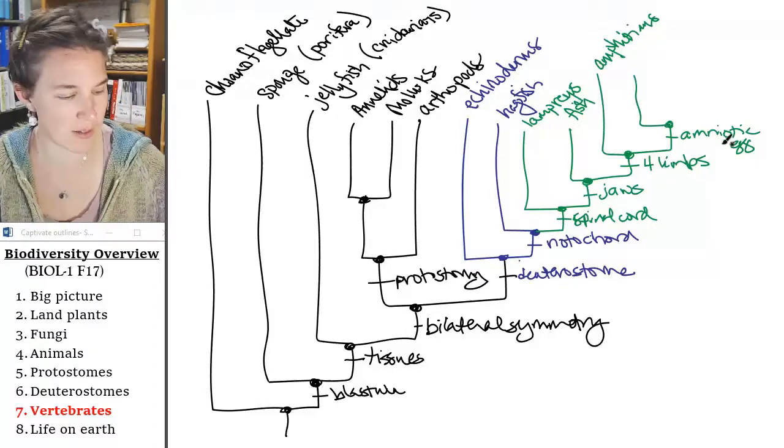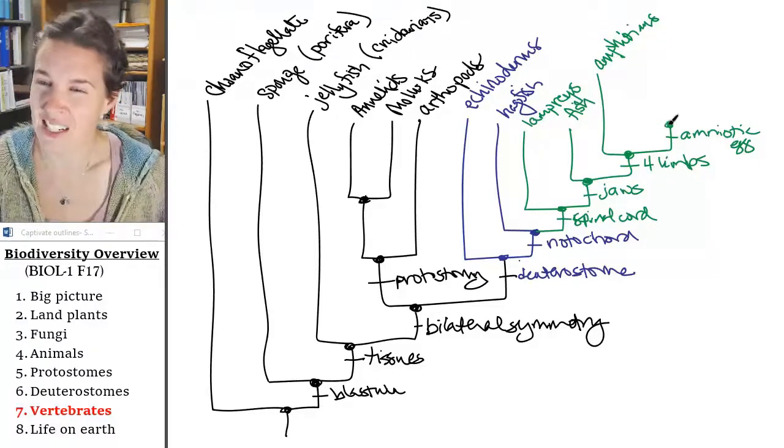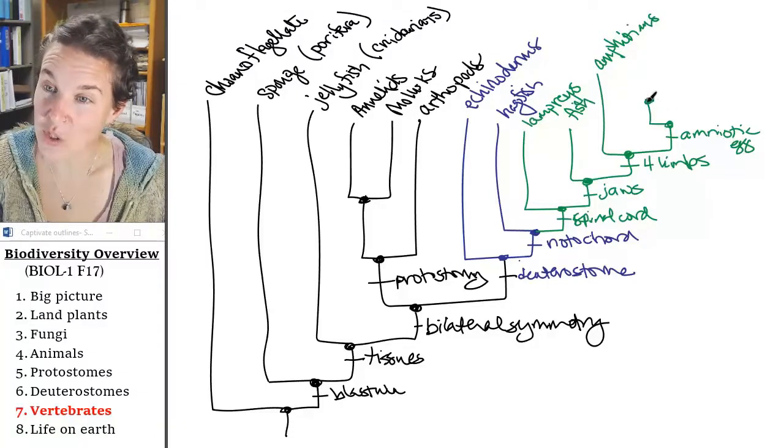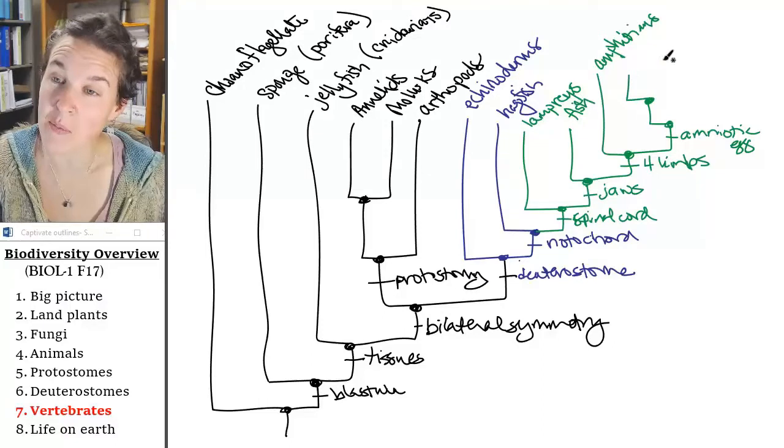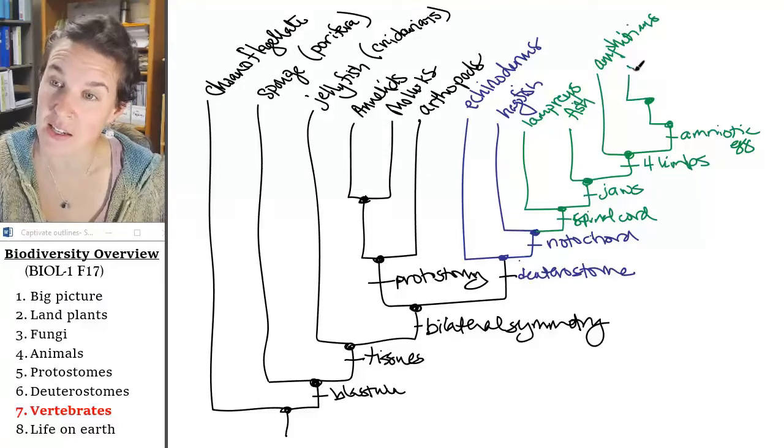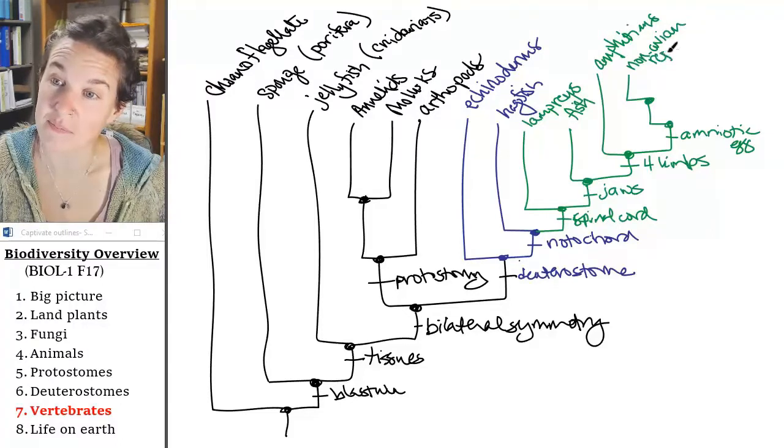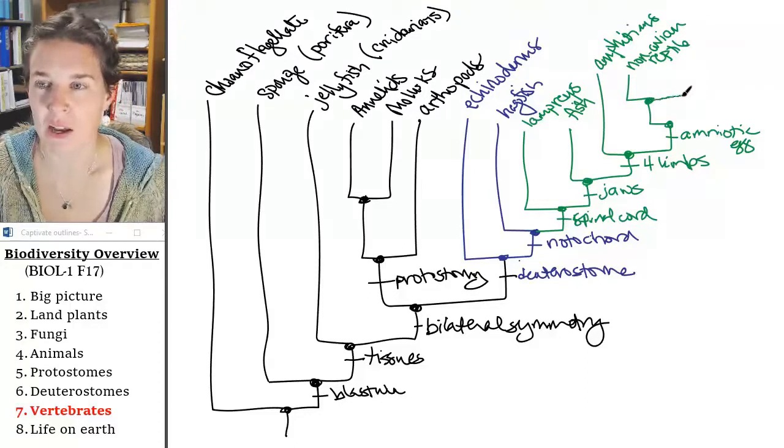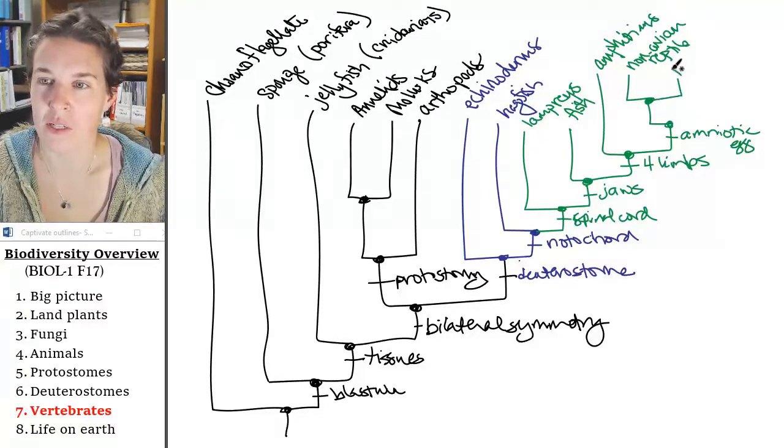Oops, I want to undo that, because this next one, these guys have an amniotic egg, but I'm going to have to do two branches because one of my branches is the, I'm going to have to write it all down, non-avian reptile, which means everybody here is a reptile. And the other one is birds.